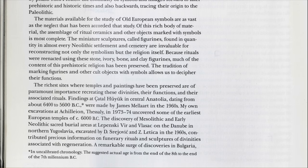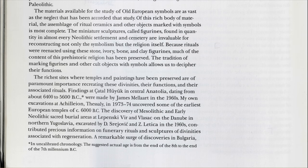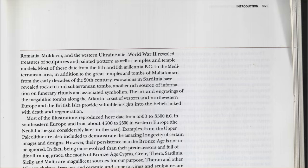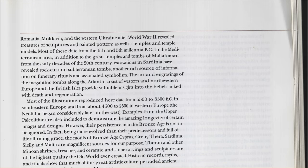The richest sites where temples and paintings have been preserved are of paramount importance for recreating these divinities, their functions, and their associated rituals. Findings at Çatalhöyük in central Anatolia, dating from around 6400 to 5600 BC — roughly 9,000 years old — are significant. My own excavations at Sesklo, Thessaly in 1973–74 uncovered some of the earliest European temples of 6000 BC. The discovery of Mesolithic and early Neolithic sacred burial areas at Lepenski Vir and Vlasac on the Danube in northern Yugoslavia contributed precious information on funerary rituals and sculptures of divinities associated with regeneration. A remarkable surge of discoveries in Bulgaria, Romania, Moldova, and western Ukraine after World War II revealed treasures of sculptures, painted pottery, as well as temples and temple models.